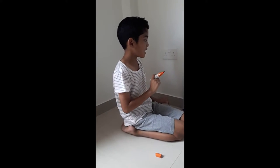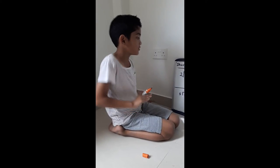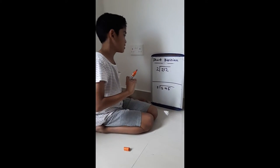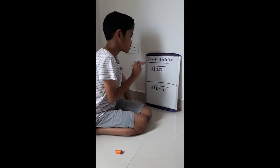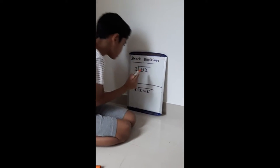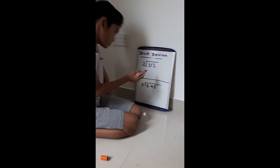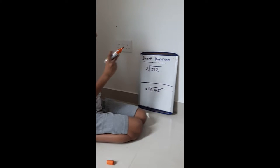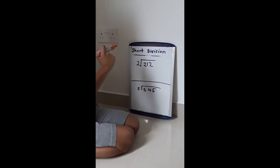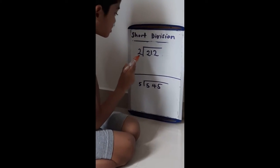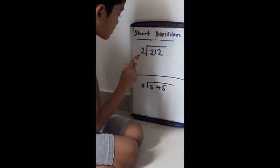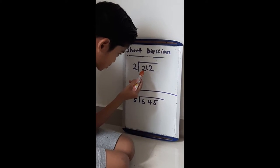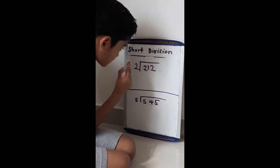Good morning everyone. I'm going to show you how to do short division. The first question is 212 divided by 2. The first number that we're going to divide is this 2 and this 2, so 2 divided by 2.